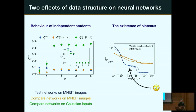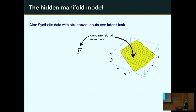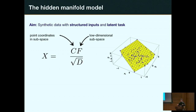These are two examples where structure in the dataset shows up. Now let me return to my original goal: a generative model for datasets with structured inputs — concentrated on some manifold — and a latent task to learn. What we propose in this recent paper is the hidden manifold model, a way to generate synthetic data fulfilling both criteria.